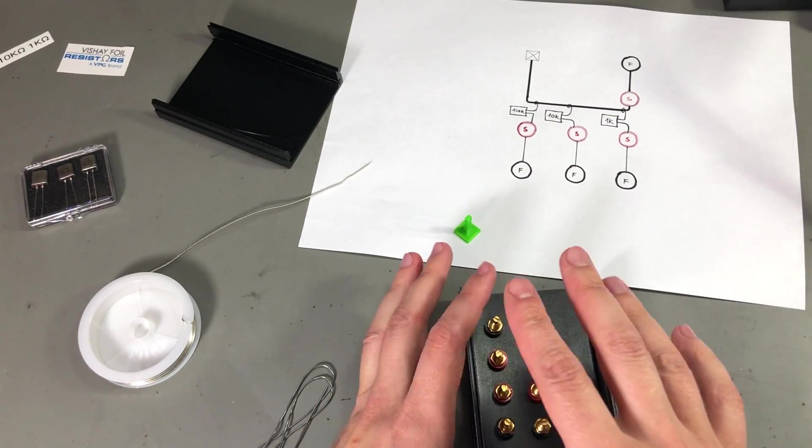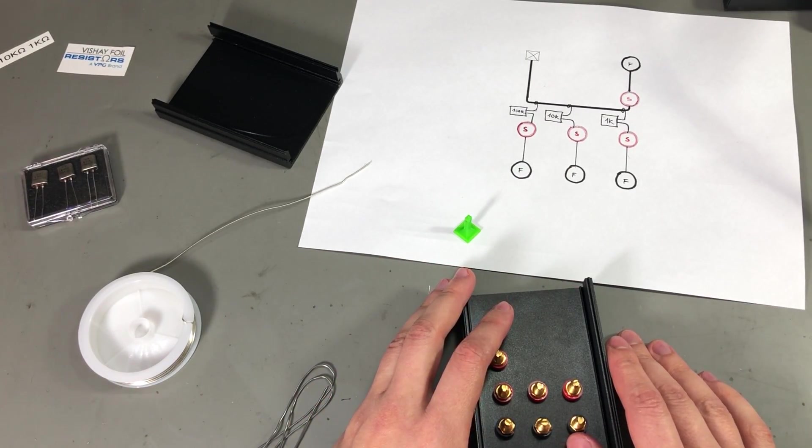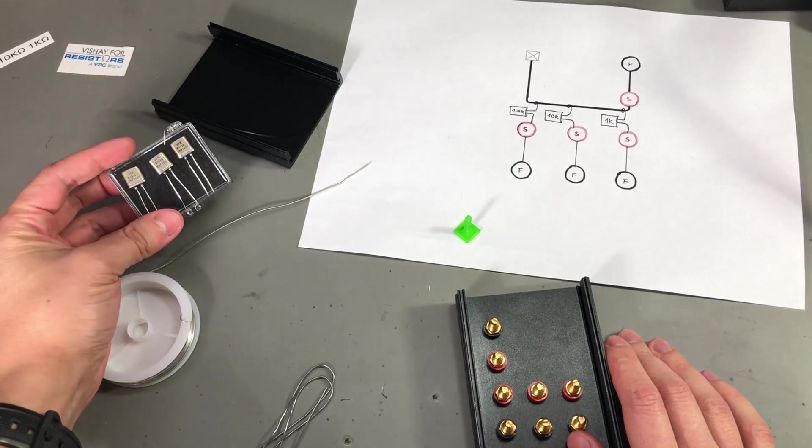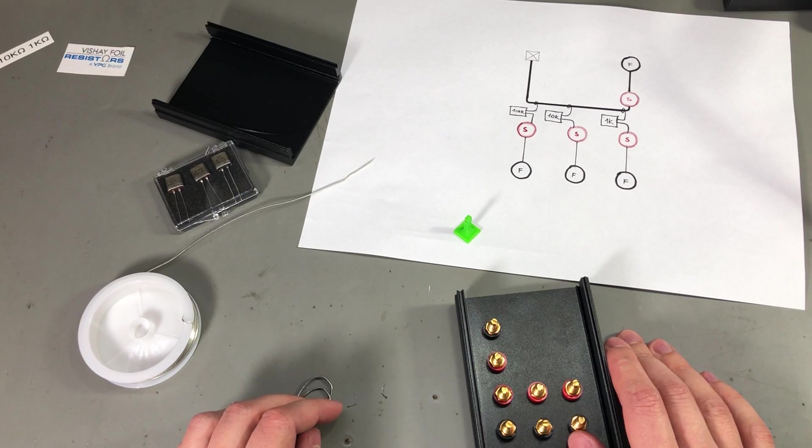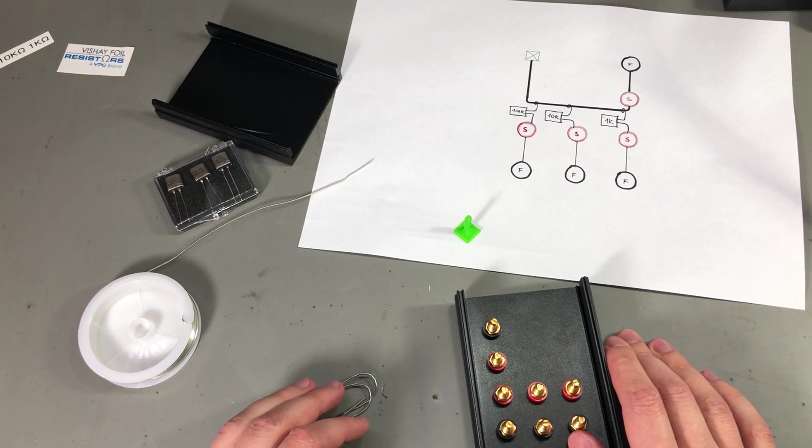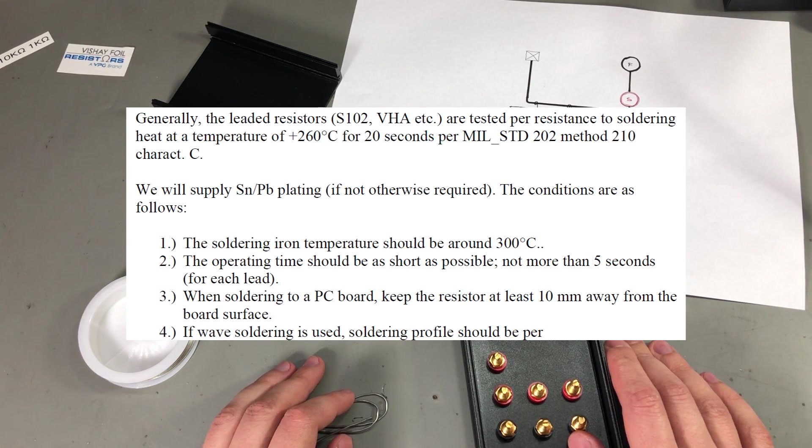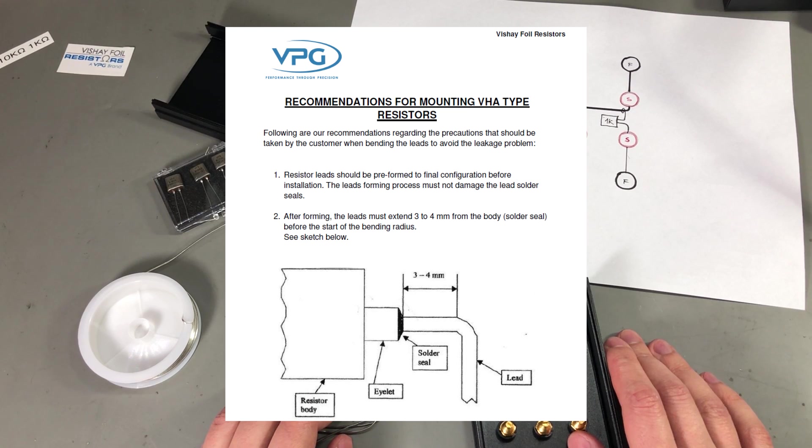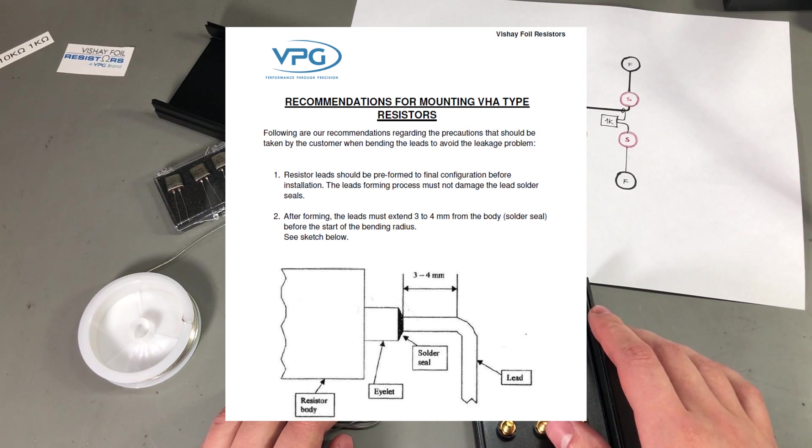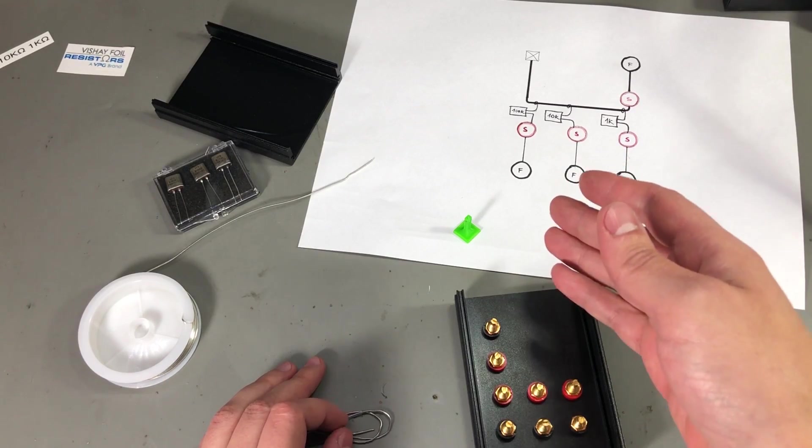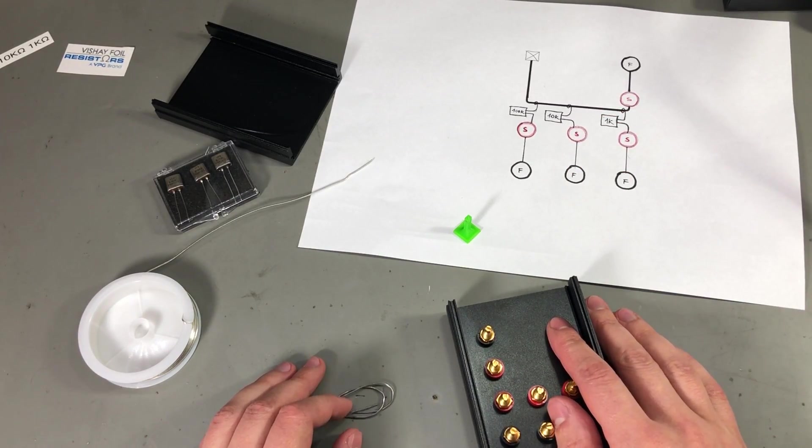I will link all of the parts used in this project in the description below. Now regarding soldering on these resistors, Vishay have two documents available and they give some general info on soldering. They say you should use no more than 300 degrees Celsius with no more than 5 seconds. And the resistor's body should be at least 10 millimeters away from the PCB. In my case, 10 millimeters, the soldering should be done at least 10 millimeters away from the body of the resistor.